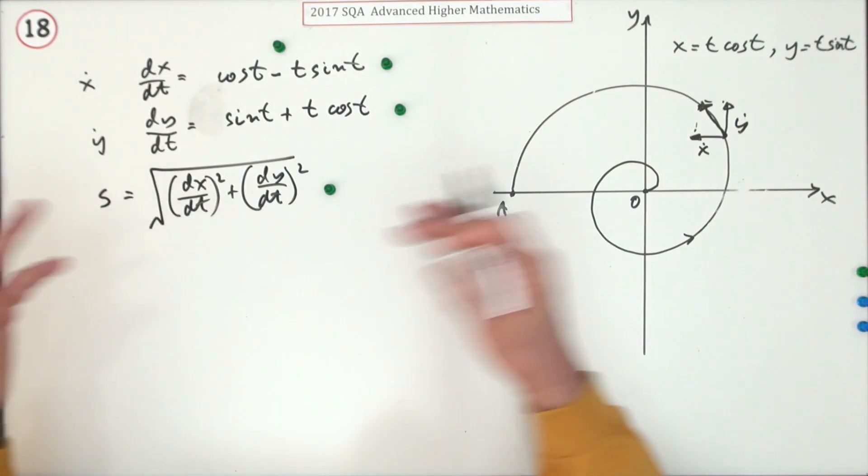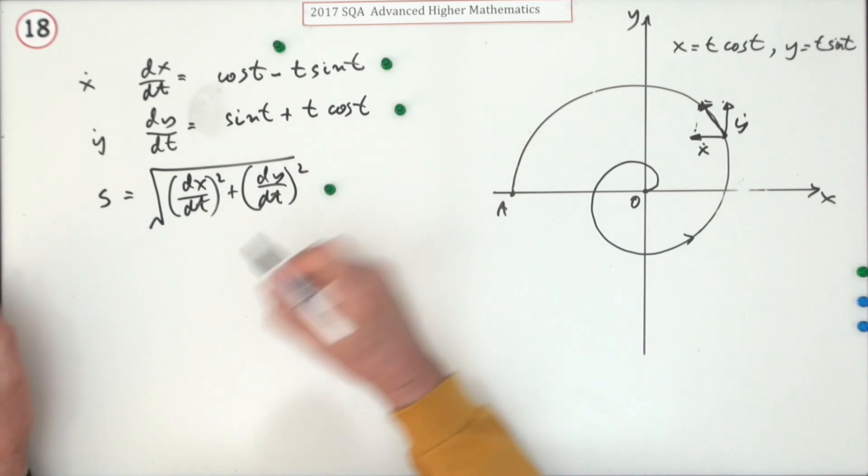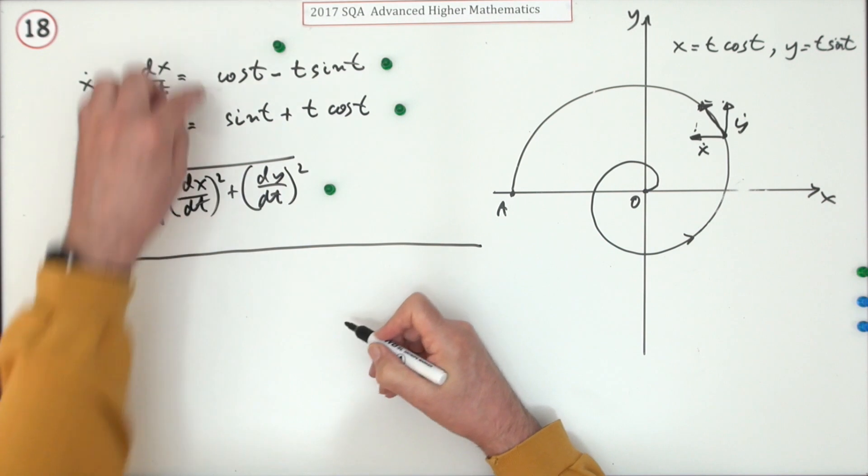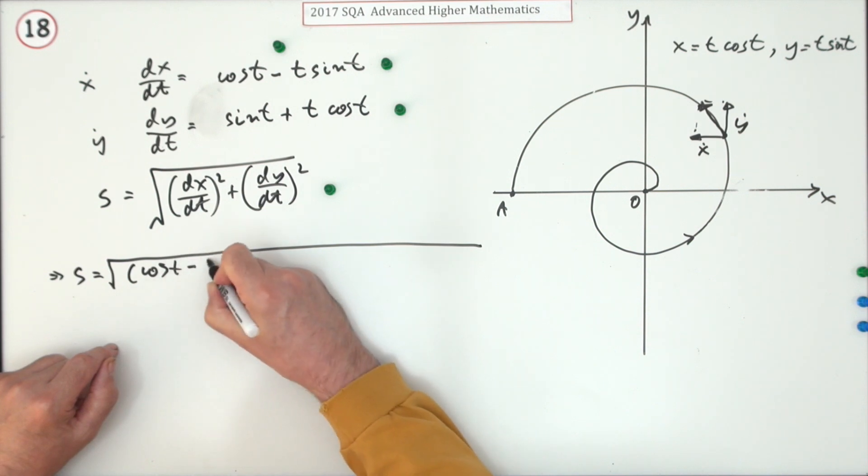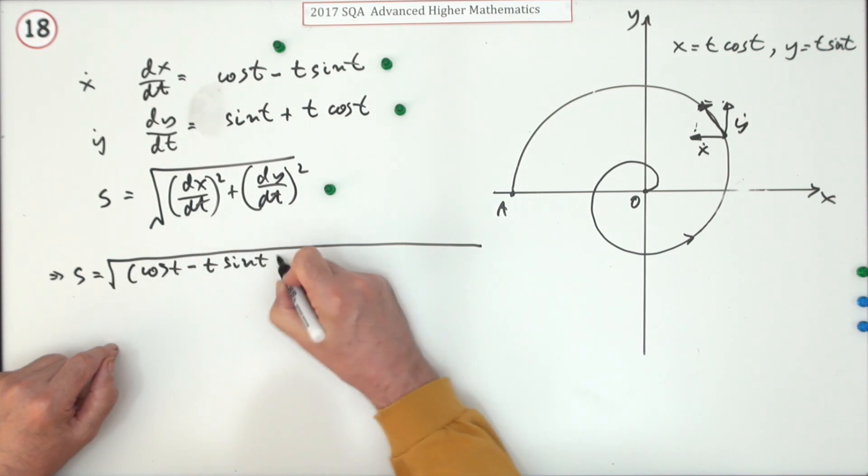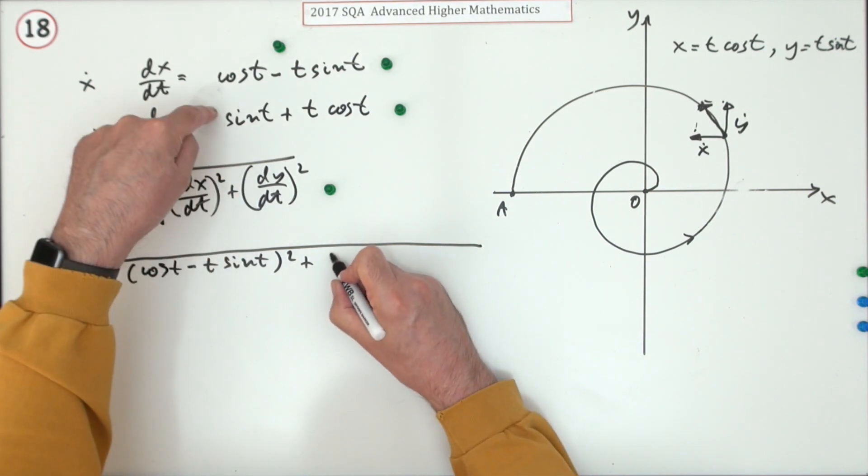But if you put this down, you get a mark for that. And then just feeding them into this gives you the final mark. That's why it looks as if they're just throwing it at you. So that means the speed's given by—now it's going to be a much longer expression because I've got to put these two parts in. So it'll be dx/dt, which is cos t minus t sin t squared, plus dy/dt, so that's sin t plus t cos t squared.